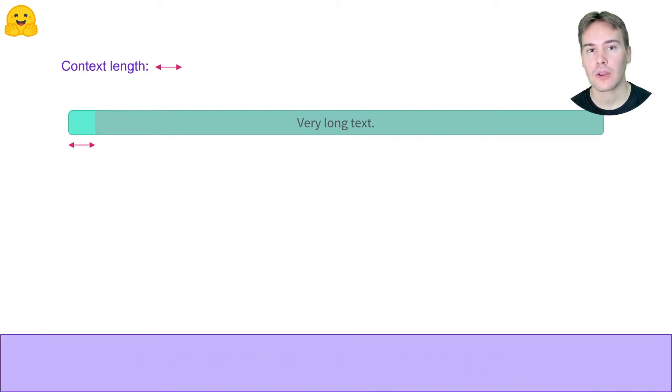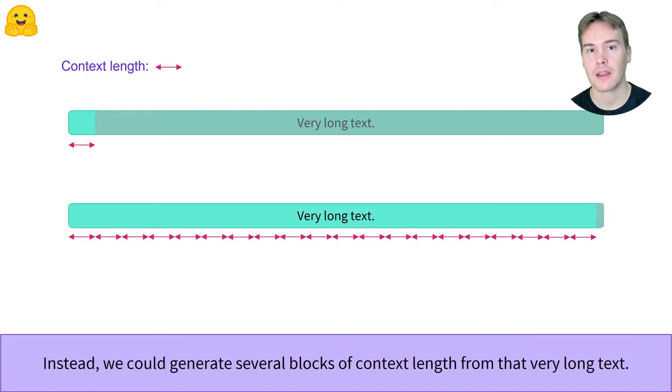This is why a second way to generate examples of text with the same lengths is to chunk our text in pieces of context length, instead of discarding everything after the first chunk. There will probably be a remainder of length smaller than the context size, which we can choose to keep and pad or ignore.